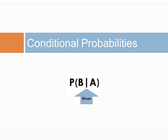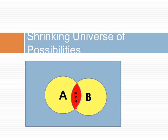Often we want to calculate the probability of an event given other situations. The probability of B given A is shown as the letter B followed by a straight line and then the letter A. The straight line designates that event A has occurred and we are interested in whether event B will occur. We can get a good intuition about conditional probability by examining the Venn diagram and shrinking the possible events to only the situation where A occurs. Recall that probability is defined as the number of times an event occurs divided by all possible events.